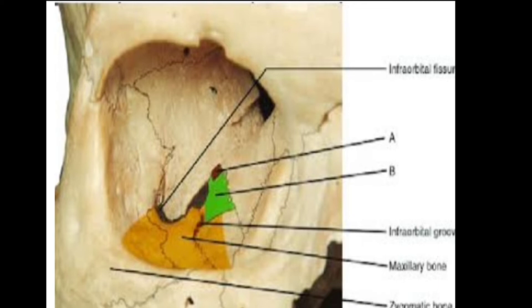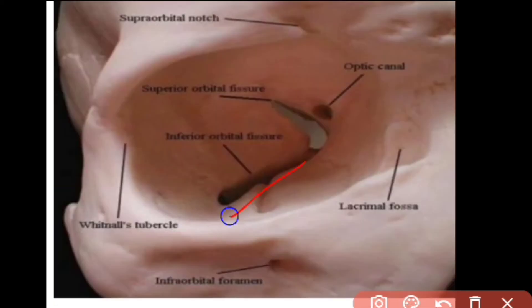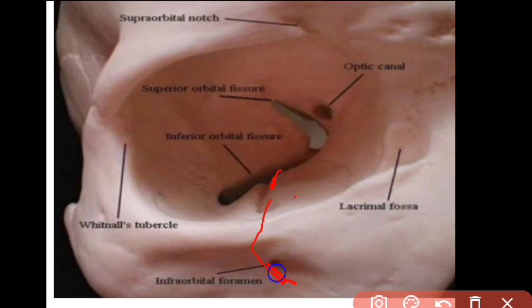The posterior part of the floor is separated from the lateral wall by the inferior orbital fissure. This continues anteriorly as the infra-orbital groove, which extends as a canal and opens on the inferior orbital margin as the infra-orbital foramen.